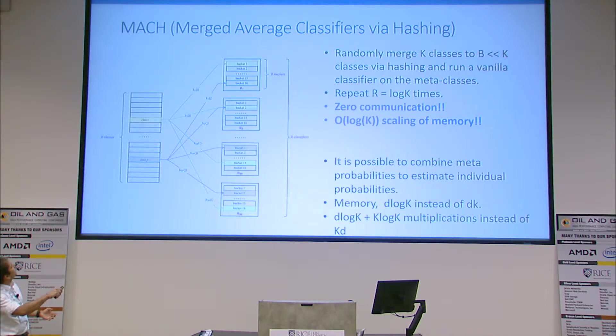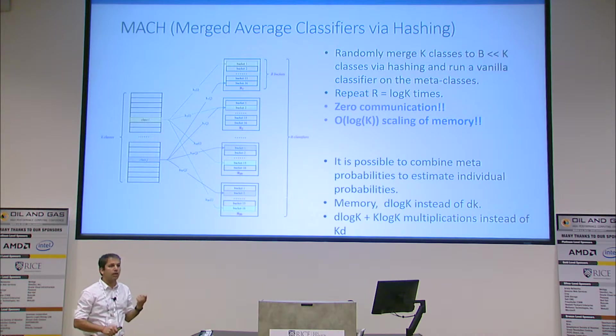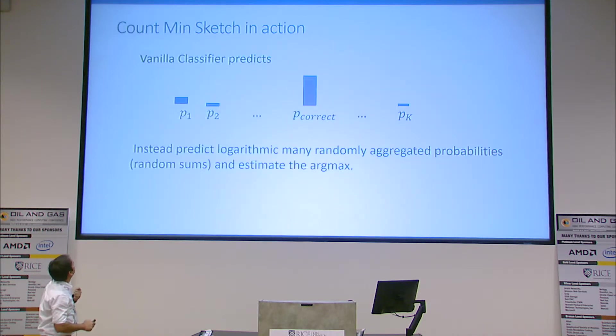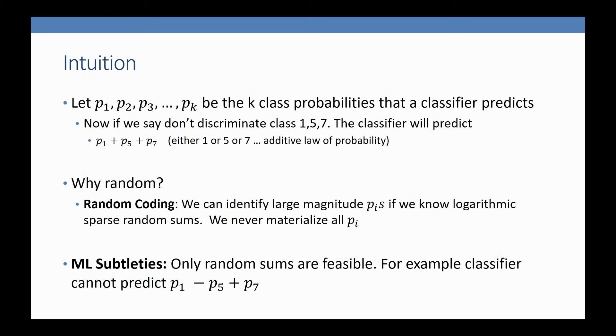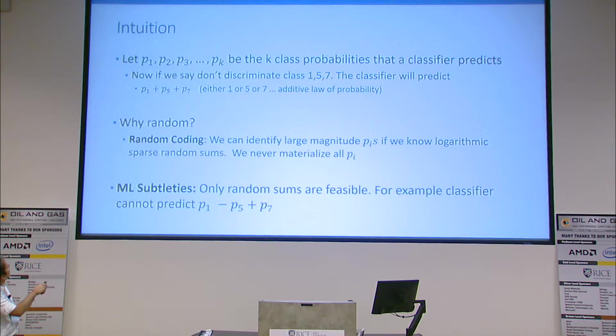Let's say a classifier tells me bucket 15 is high class and bucket 16 is high class. If there's an intersection of buckets 15 and 16, most likely those are the high classes, assuming the classifier is doing something. That's precisely the theory of compressed sensing, count min sketch—they're all the same. Instead of predicting K class probabilities, I'm taking a random summation and predicting the summation. The classifier probabilities are additive. If I merge class 1, 5, and 7, the classifier predicts P1 plus P5 plus P7, whereas I cannot do P1 minus P5 plus P7.